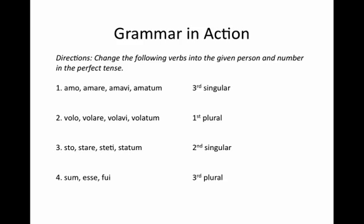All right, now that we've seen these charts and hopefully you're beginning to memorize them, take your time, write down the forms, make flashcards — whatever it takes. Let's practice them a little bit. In front of you right here, we have four verbs and next to that, you have a person and number. I want you to give me the person and number indicated for the verb in the perfect tense. Now would be a good time to pause the recording, take a few minutes, and work on these. We'll come back together and go over them in a few.